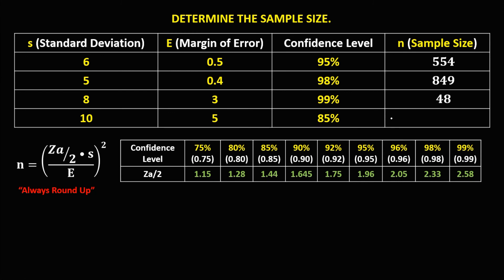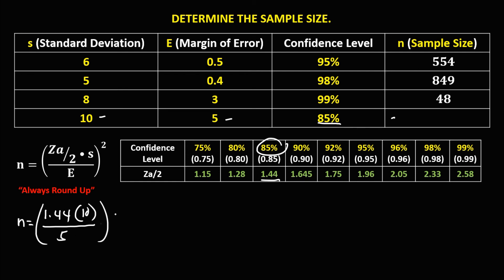For the last one, n equals — the confidence level is 85%, so the confidence coefficient is 1.44, times the standard deviation, which is 10, over the margin of error, which is 5, then quantity to the power 2.